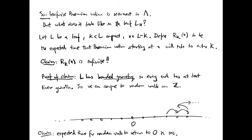Let L be a non-compact leaf of our lamination and let k be a compact subset and x be a point in a non-compact component of L minus k. Define R sub k of x to be the expected time before Brownian motion starting at the point x will enter the compact subset k, if it ever does. The fundamental point is that r k of x is infinite. This is perhaps rather surprising.